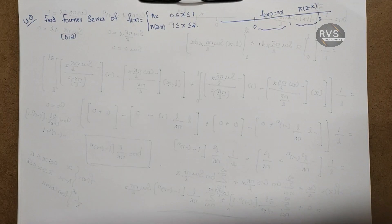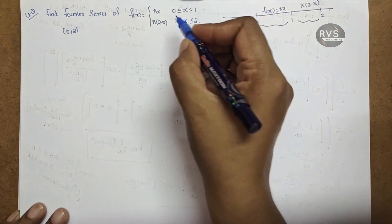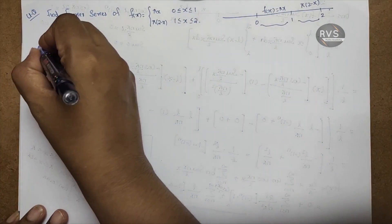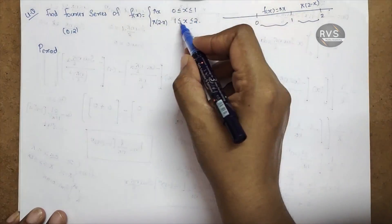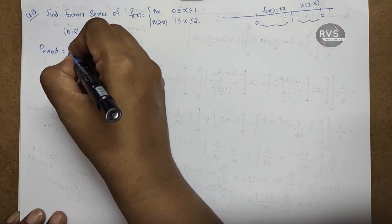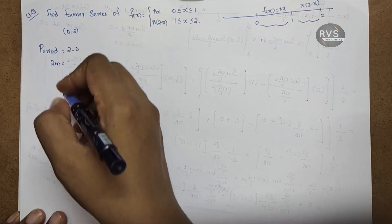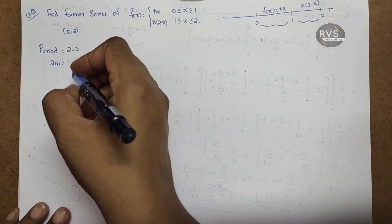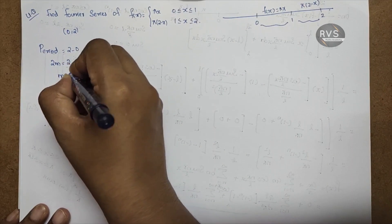In this problem, the interval is 0 to 2. What is the period? 2 minus 0 is 2, so the total interval is 2m. The total interval is 2m, so m equals 1.